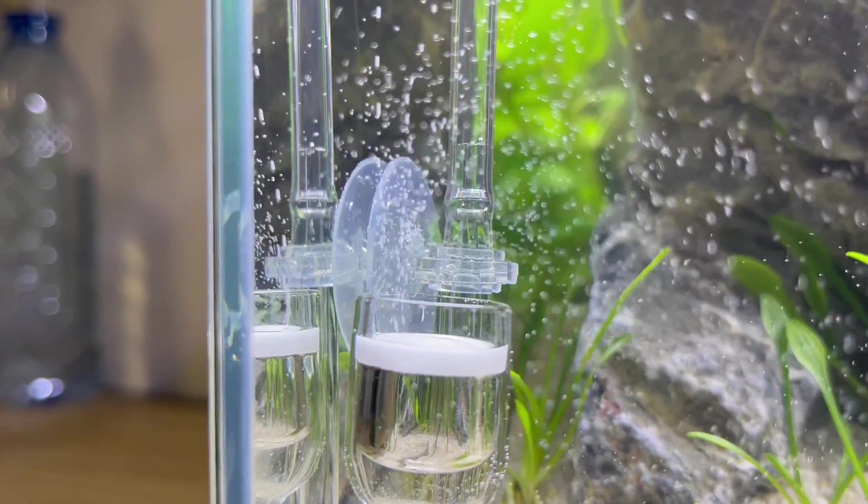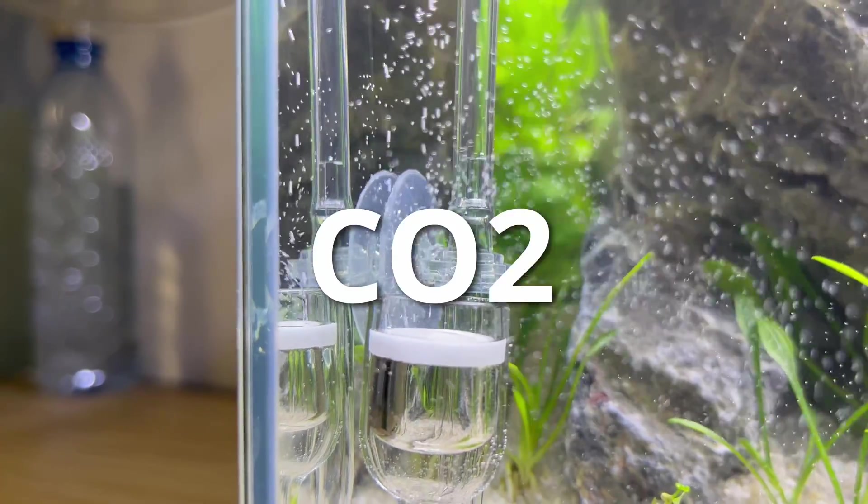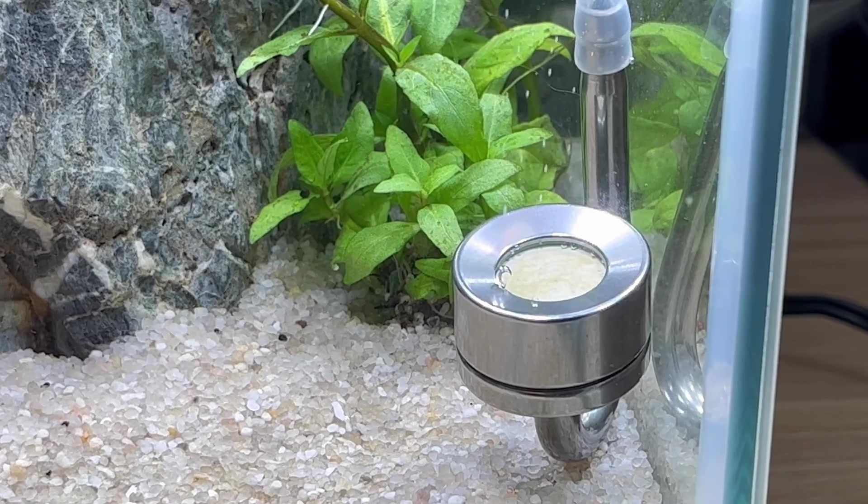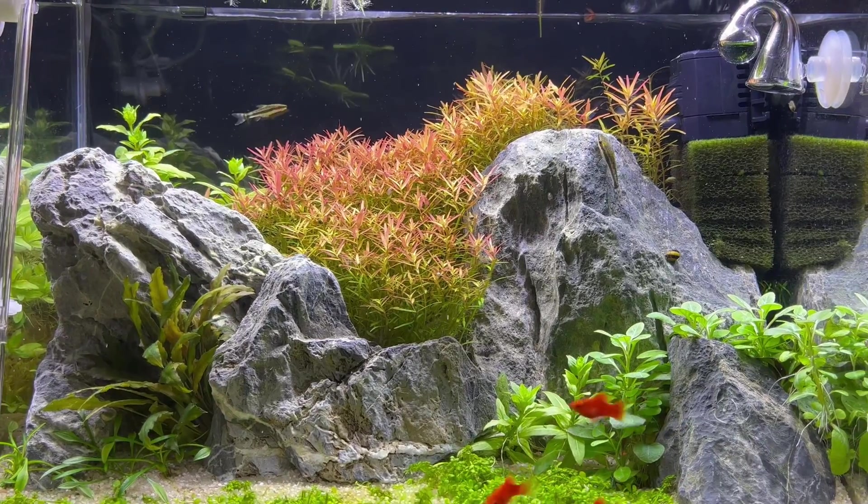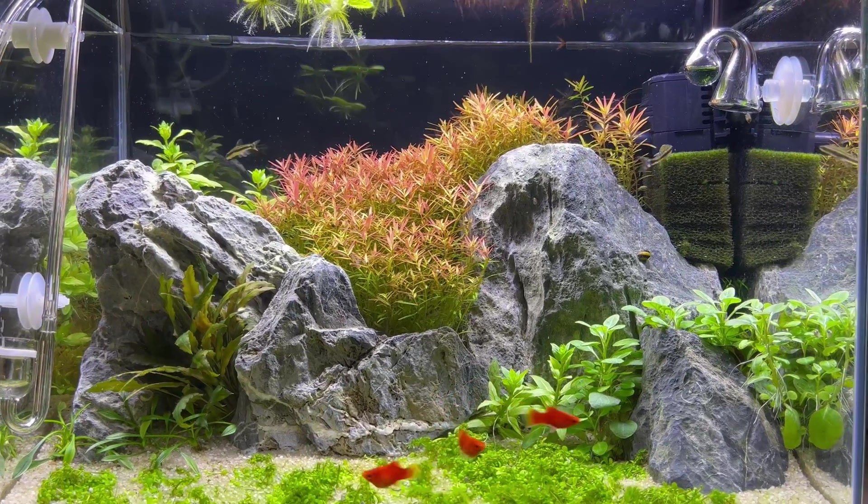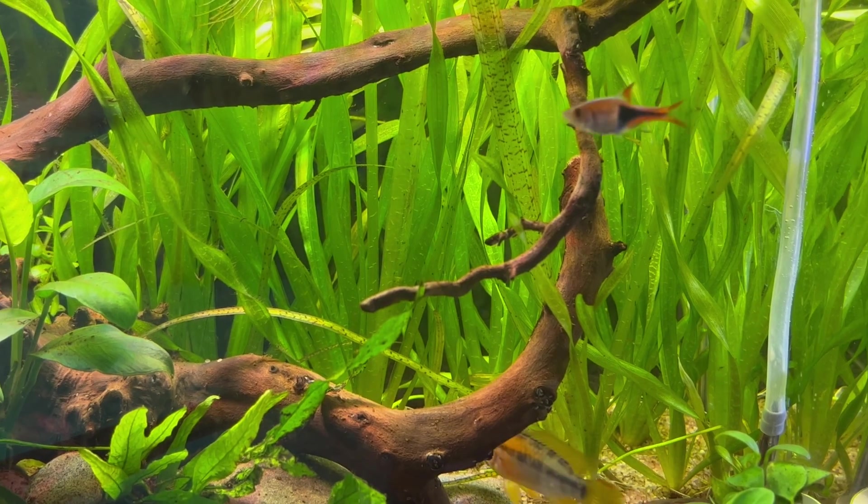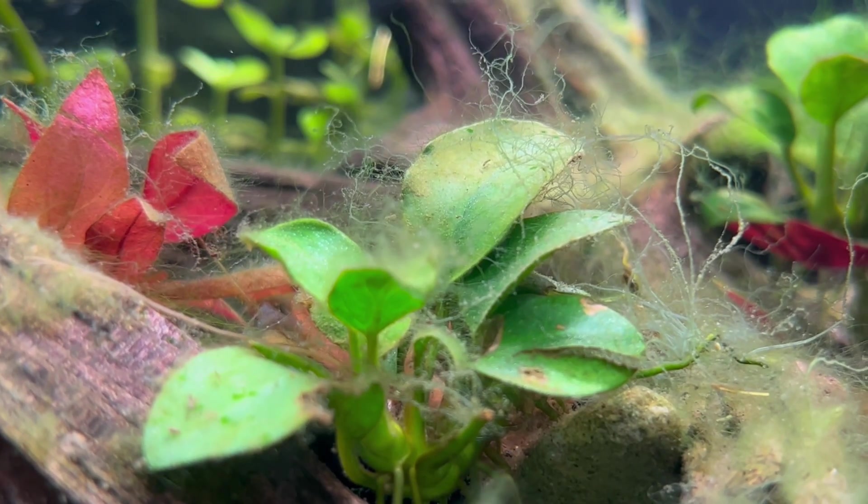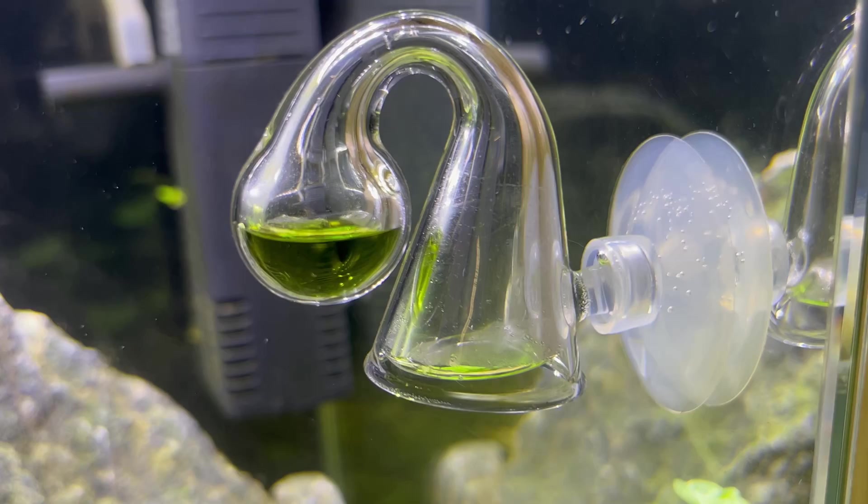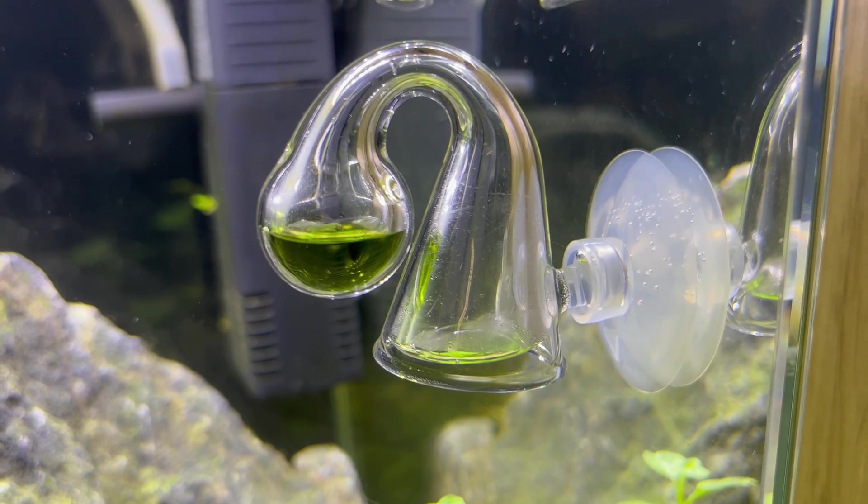Carbon dioxide, or simply CO2. One of the most crucial elements needed for the health and growth of plants in planted tanks. It also helps with algae control, pH regulation, and many more.